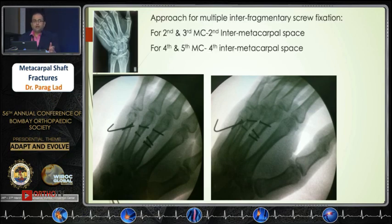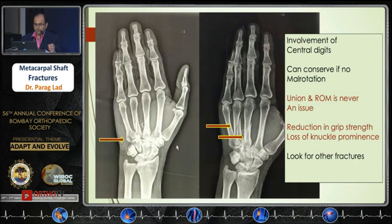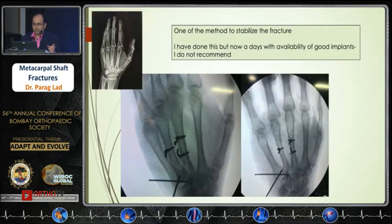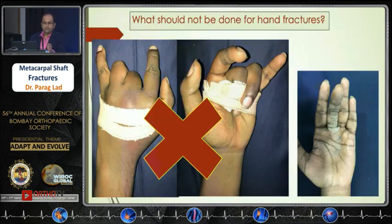When the central digits are involved, union and range of motion are usually not an issue, but grip strength is the main concern. They can be fixed with small tension band wiring. Nowadays, with good quality implants, we don't need to use tension band wire.